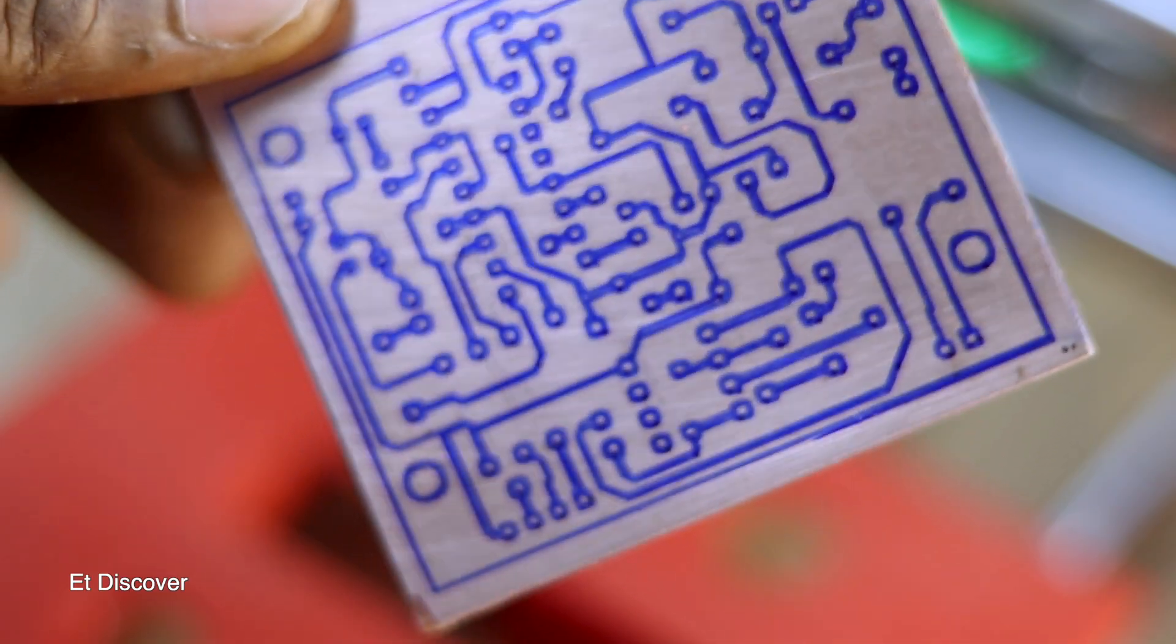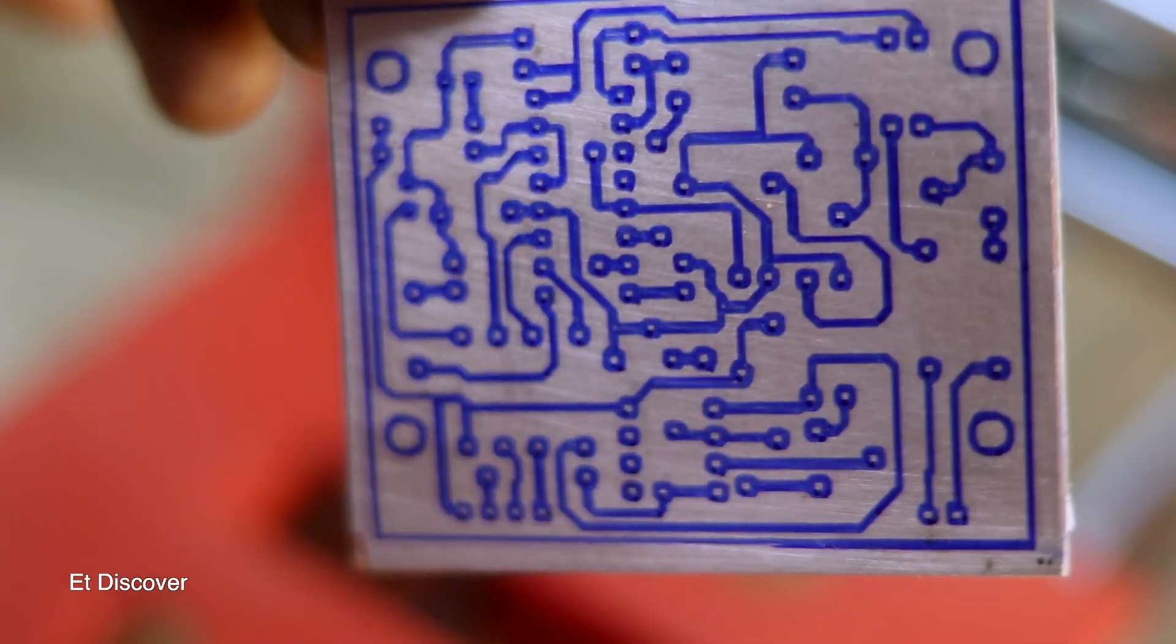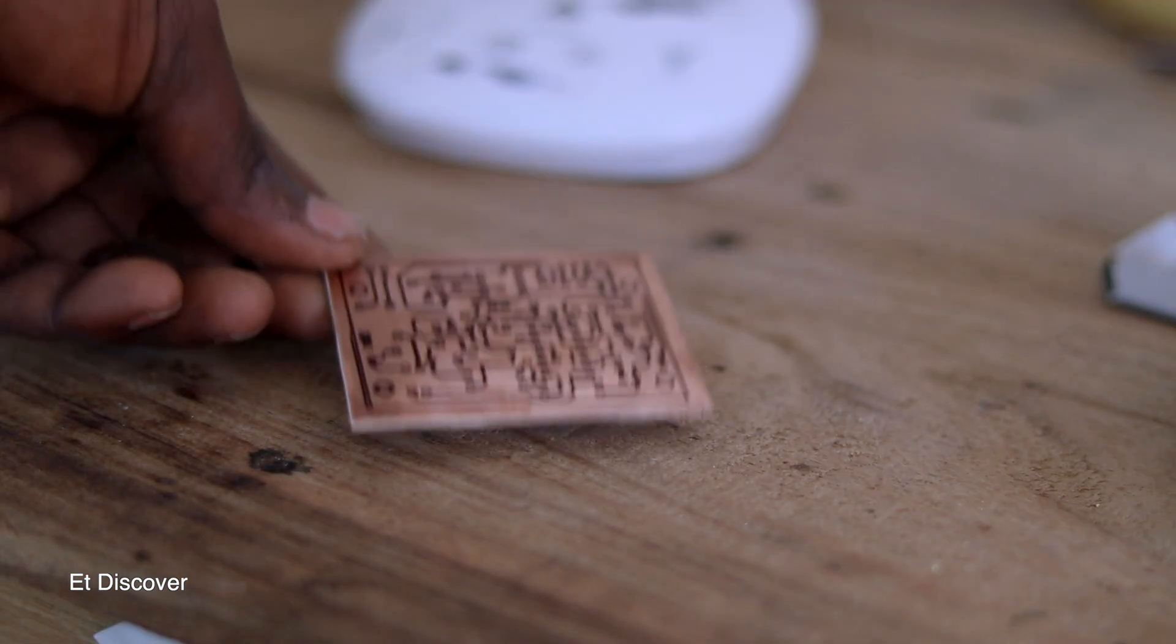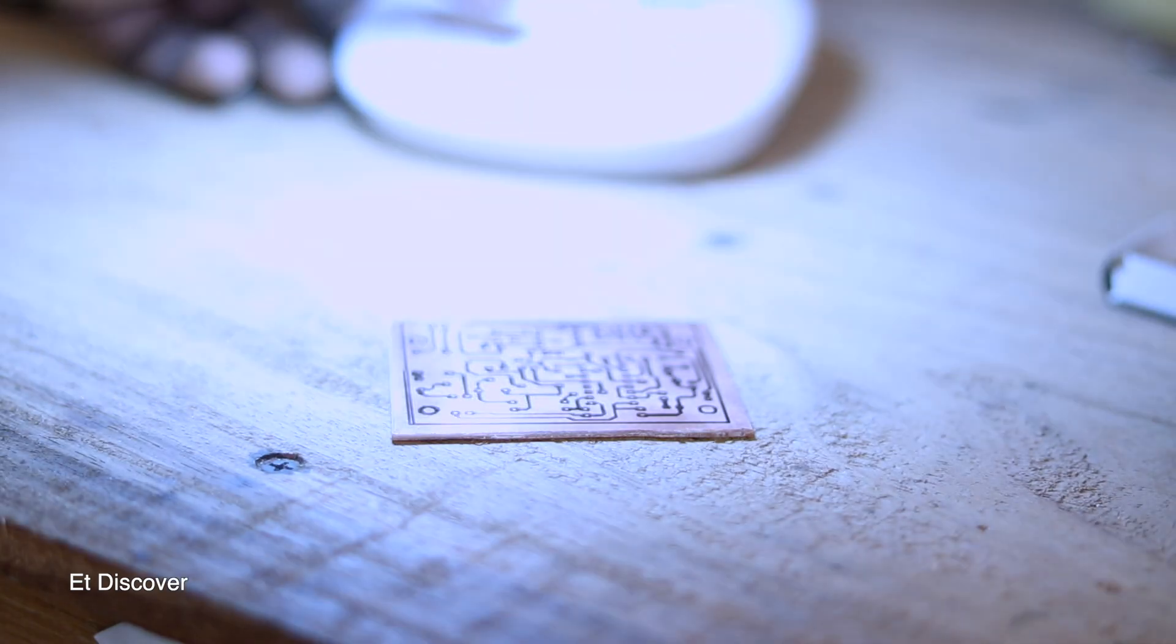Okay, see this is the final result and this circuit is not too bad. This is usable for any kind of circuit, right? But guys, before the chemical process, at first you need to dry this PCB in a very good way.